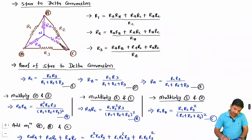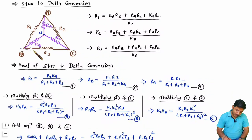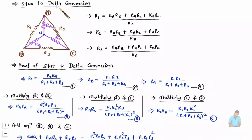Both sets of formulas match, confirming the conversion. To summarize: when converting star to delta, compute RA·RB + RA·RC + RB·RC, then divide by RC for R1, by RB for R2, and by RA for R3.